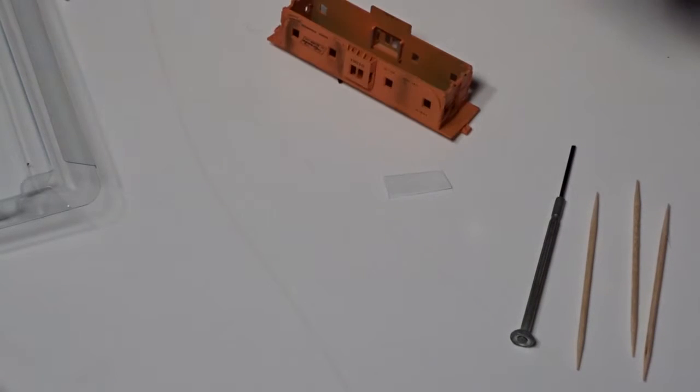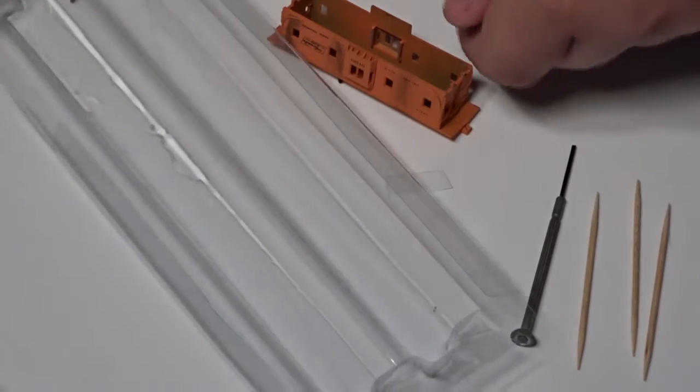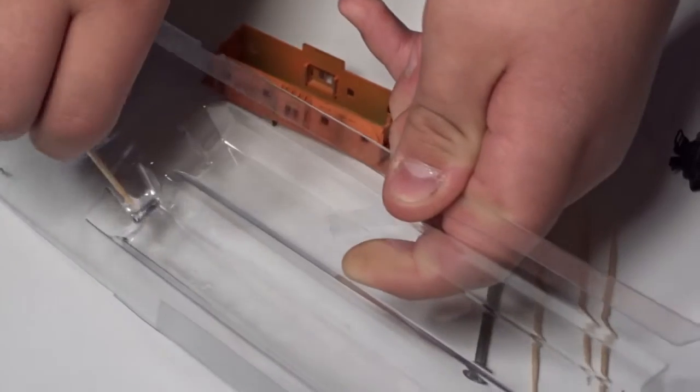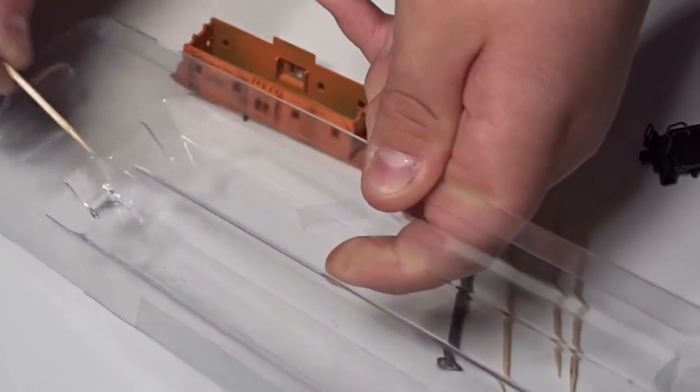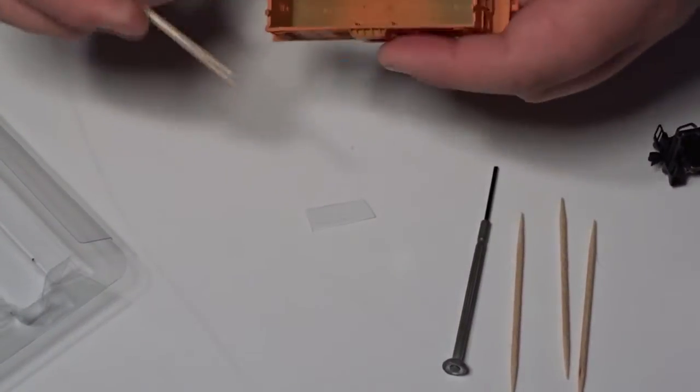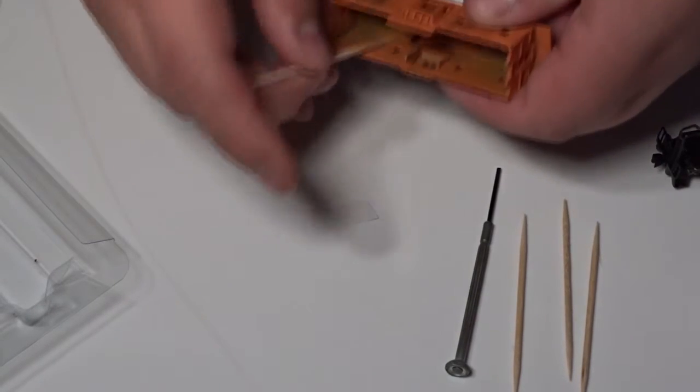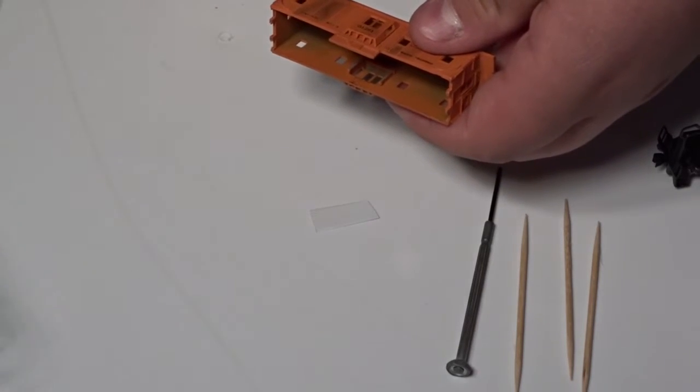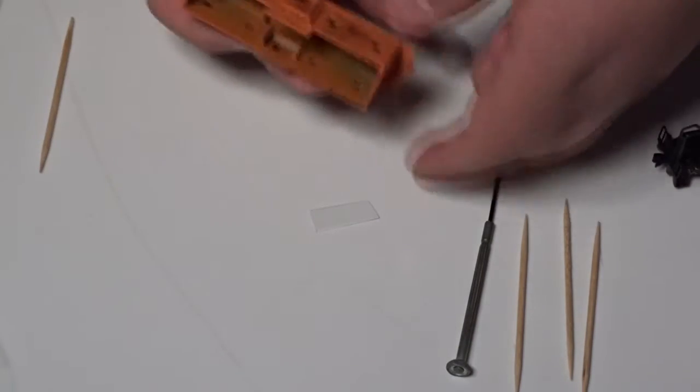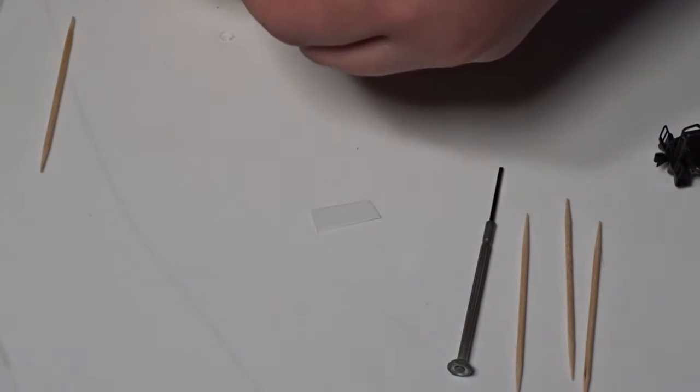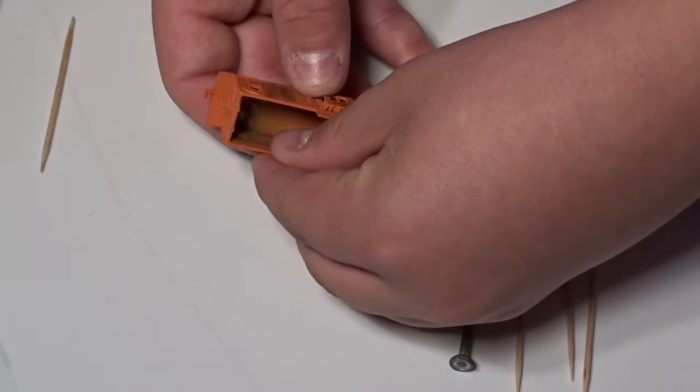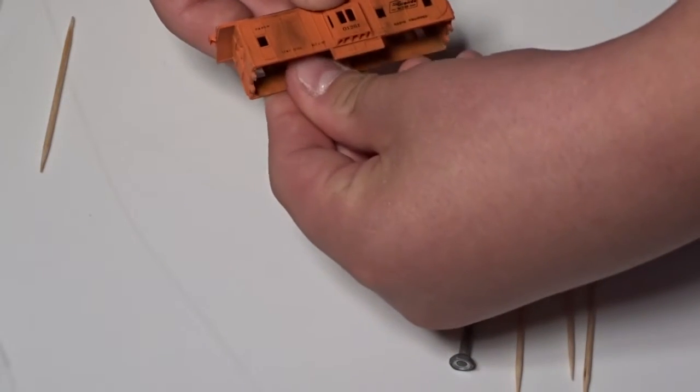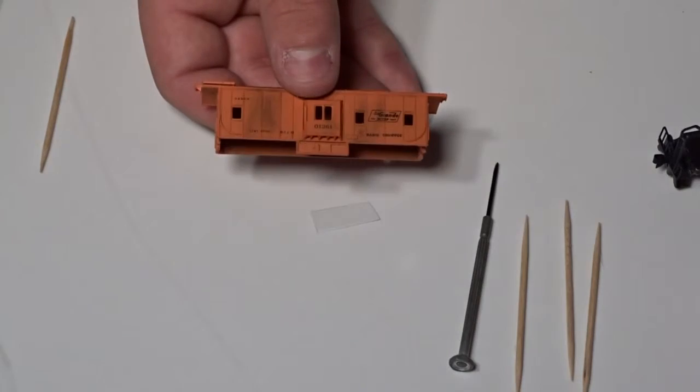And so then what you're going to do is get your super glue and dip your toothpick in it. Get a good bit on there, but don't do too much or it could smear. Then rub it on the inside there so there's a decent amount. And then you stick your window in. Like so. Hold it until it's dry.